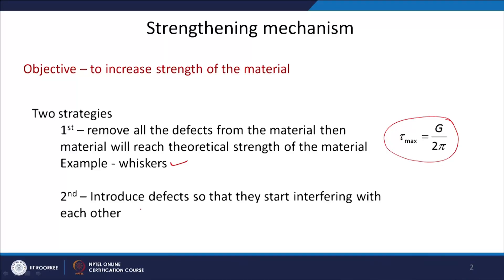This is a very expensive approach. The second strategy is to introduce too many defects — if I am not able to remove them, let me introduce a large number of defects so that they start interacting with each other, cutting each other down, which increases the strength. All the strengthening mechanisms are based on this second strategy: increase the number of defects, let them interact with each other, and thereby increase the strength of the material.